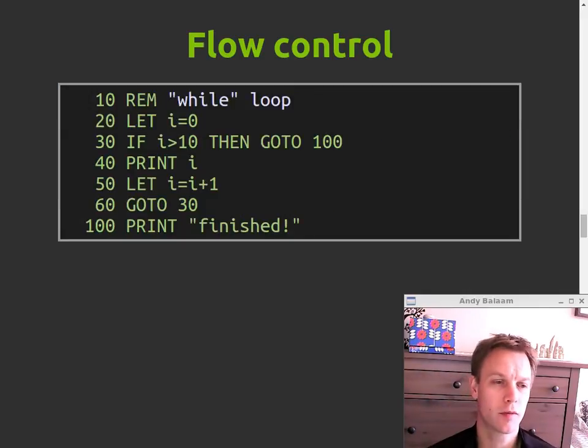Here's how you would do something that looks a bit like a while loop. Initialize your I and then basically check for the ending condition and if you ended jump to the end which is what that GOTO 100 means on line 30. If we haven't ended it do the body of the loop and then on line 60 we loop back to line 30 and check again whether we finished. So that's how you would come up with a while loop.